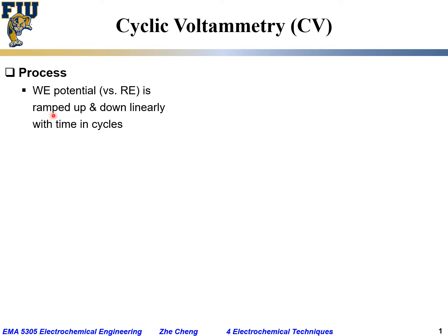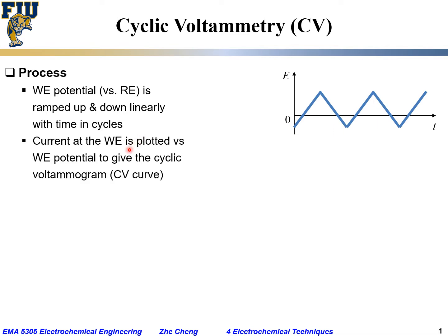You typically ramp up and down the voltage linearly. When you do this cycle, the voltage is changed linearly with time. Here we plot E for potential, T for time, and you can see the potential ramped linearly up, linearly down, linearly up, linearly down in cycles. You then record the current through the working electrode, and plot the current versus potential to give the cyclic voltammogram, or simply CV curve.